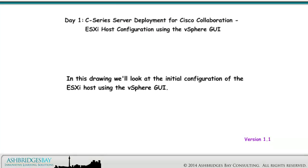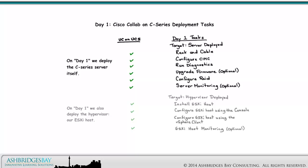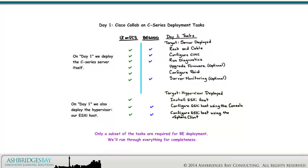In this drawing, we'll look at the initial configuration of the ESXi Host using the vSphere GUI. Here are the Day 1 tasks for Cisco Collab on C-Series. On Day 1, we deploy the C-Series server itself and the hypervisor, our ESXi Host. Only a subset of the tasks are required for BE deployment. We'll run through everything for completeness.